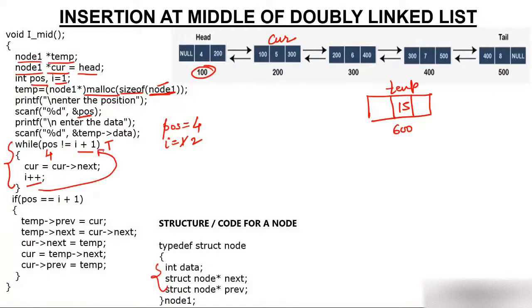We move inside the loop again: current becomes current->next, which is 300, so current moves to the node at 300, and i becomes 3. We check the while condition again: is 4 not equal to 3+1=4? No — 4 equals 4, so the condition becomes false and we exit the while loop.